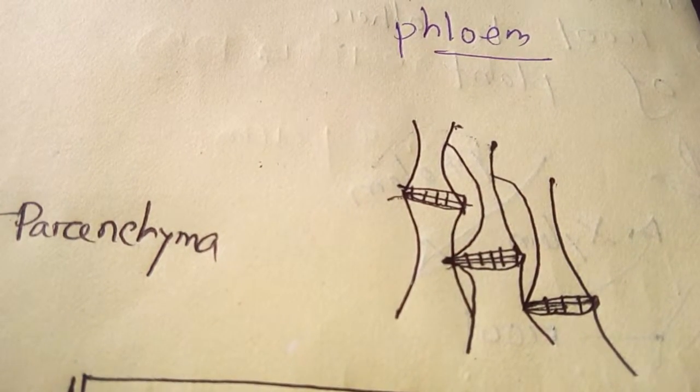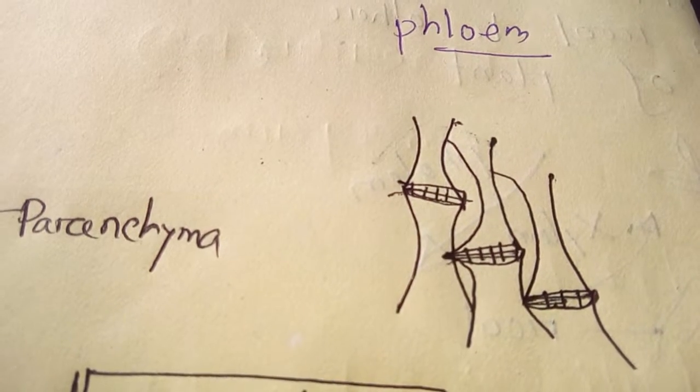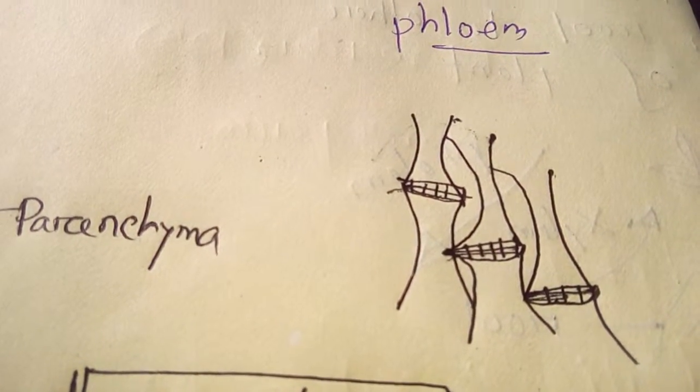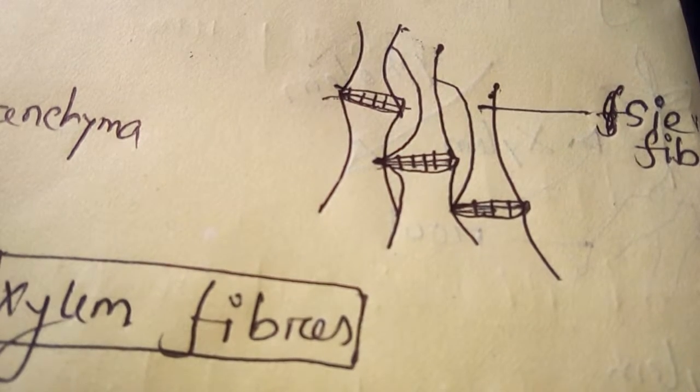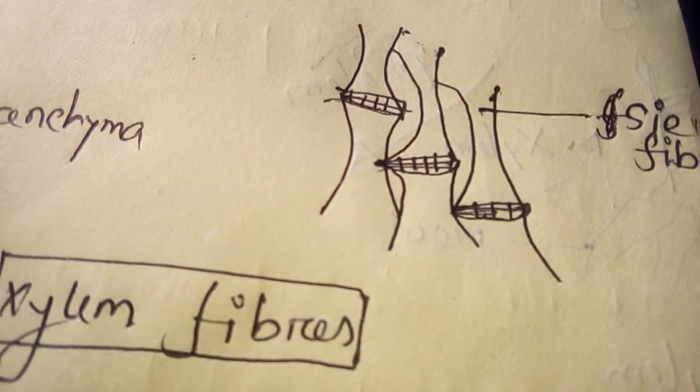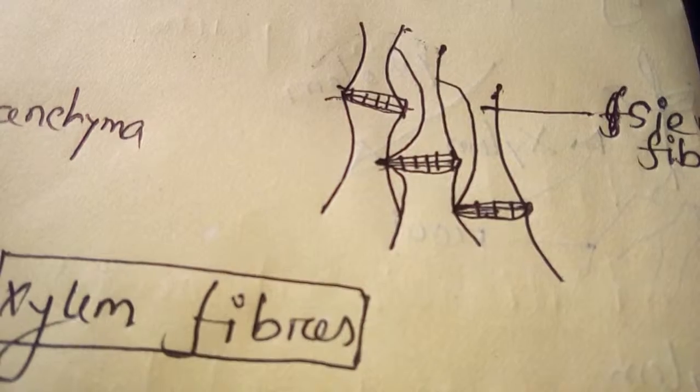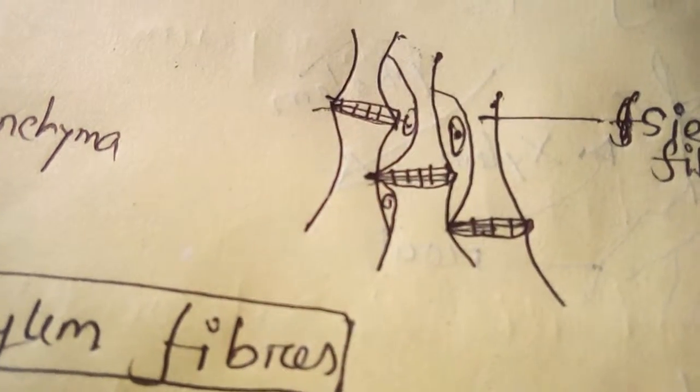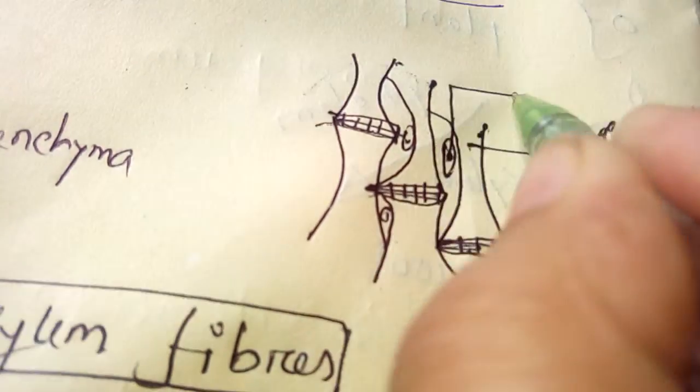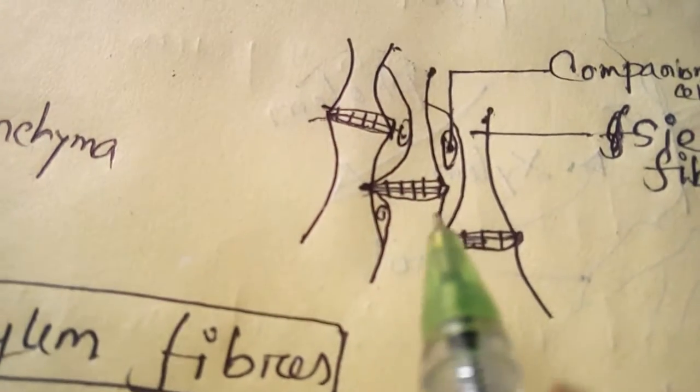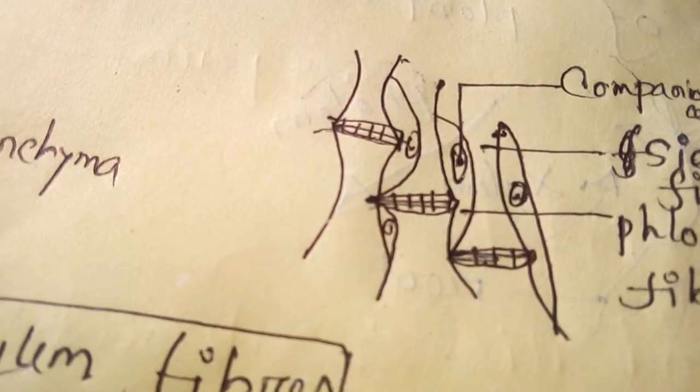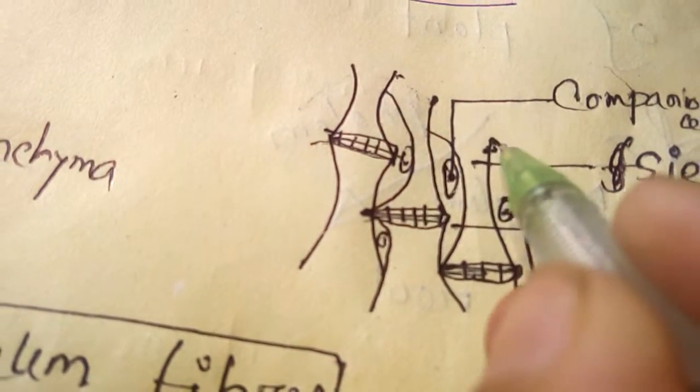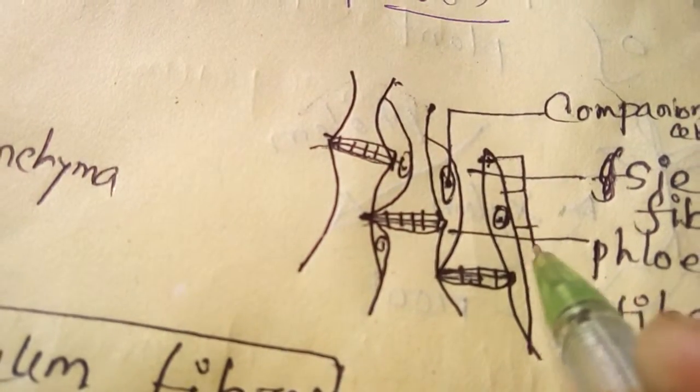In case of phloem, there are present a lot of sieve fibers. Between two sieve fibers are present fiber cells and companion cells. Those are companion cells. And this is phloem fiber. And outside, there are present phloem parenchyma.